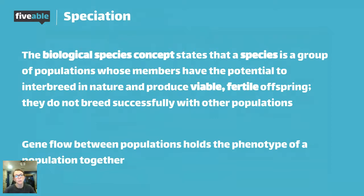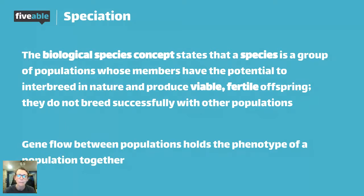An important point: gene flow between populations holds the phenotype of that population together. In order for speciation to occur, you really need to stop gene flow between two populations. Remember, populations are the same species living in the same area. If those populations break off into two different areas, as with the Founder's Effect we discussed in microevolution, we need to make sure genes are not flowing between those populations anymore — otherwise they'll go right back to ground zero and become mixed groups of the same species again.